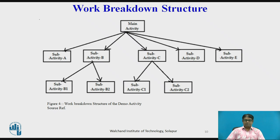The main activity is composed of activities A, B, C, D, and E respectively. Activity B is decomposed into sub-activities B1 and B2, and activity C is decomposed into sub-activities C1 and C2, as shown in the diagram. The WBS helps the project manager to monitor the overall project.